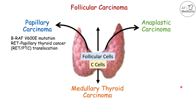There are particular mutations more common with each type of cancer. In papillary carcinoma, a BRAF V600E mutation is the most common type of mutation that can cause or increase the risk of having papillary carcinoma. Another important mutation is a RET papillary thyroid cancer or RET PTC translocation.